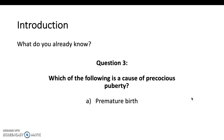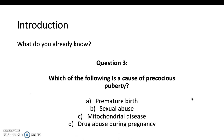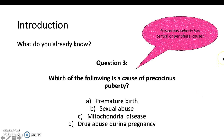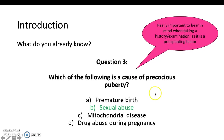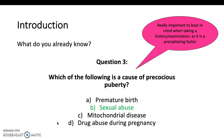Last question: which of the following is a cause of precocious puberty? The causes can be split into central or peripheral, which we'll go into in more detail. Sexual abuse can actually be an important cause of precocious puberty — something to really bear in mind when taking a history and examination. All the other options are not proven to be a cause. We'll go into the causes later.